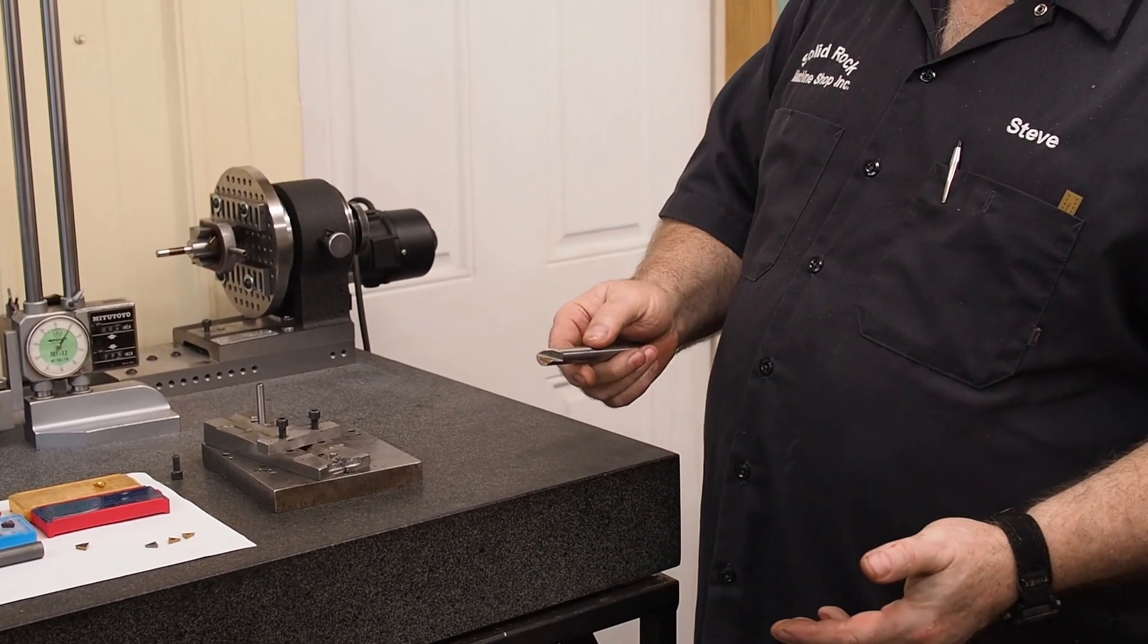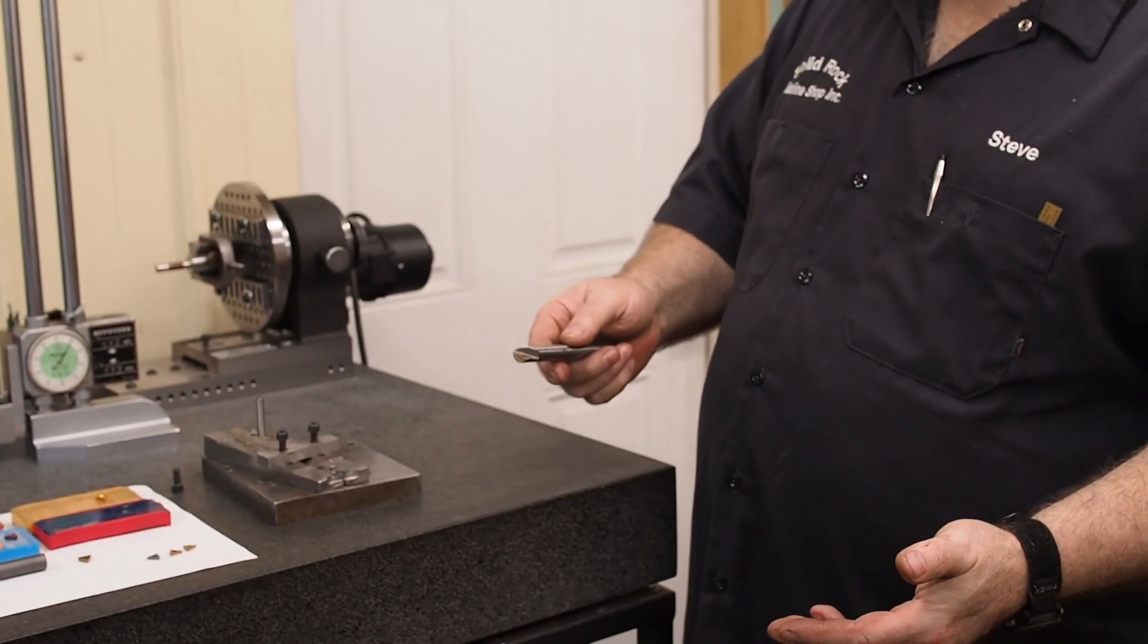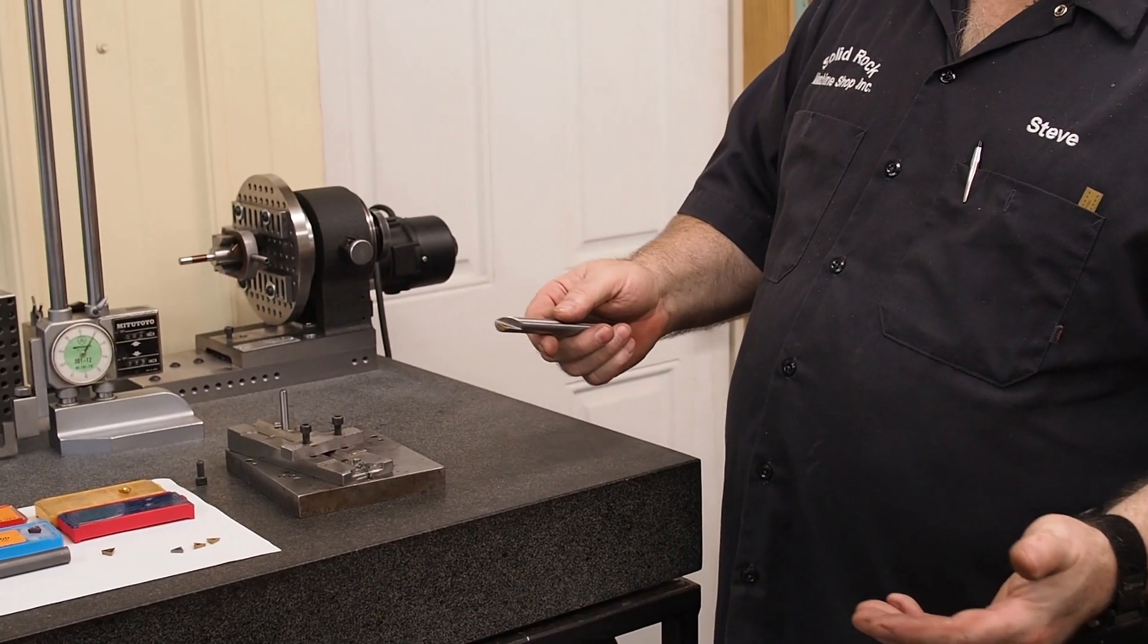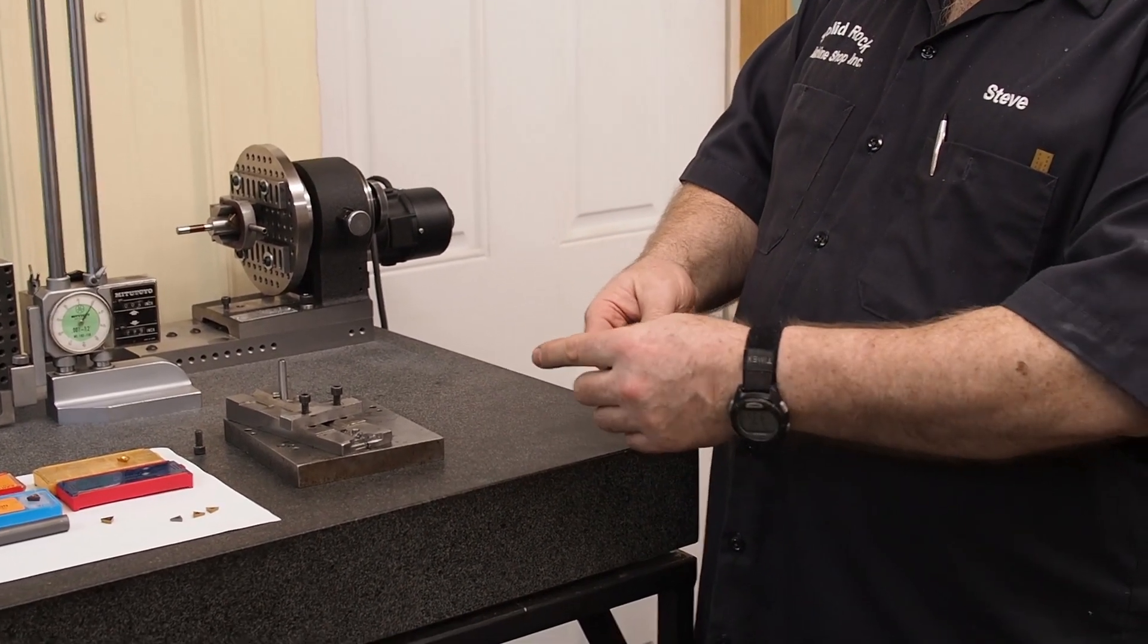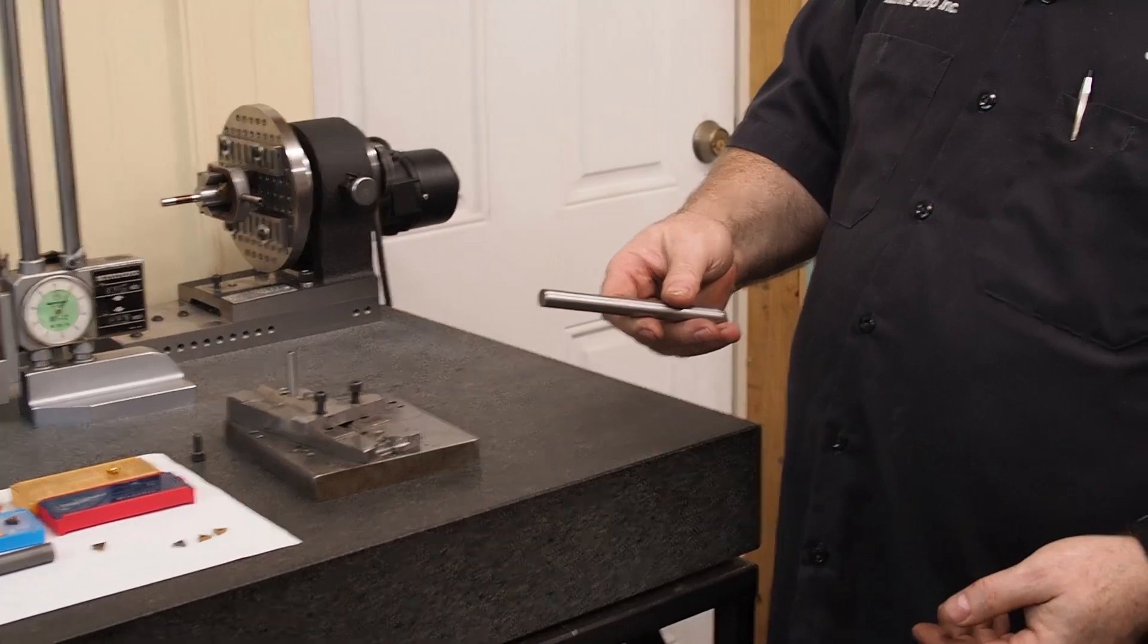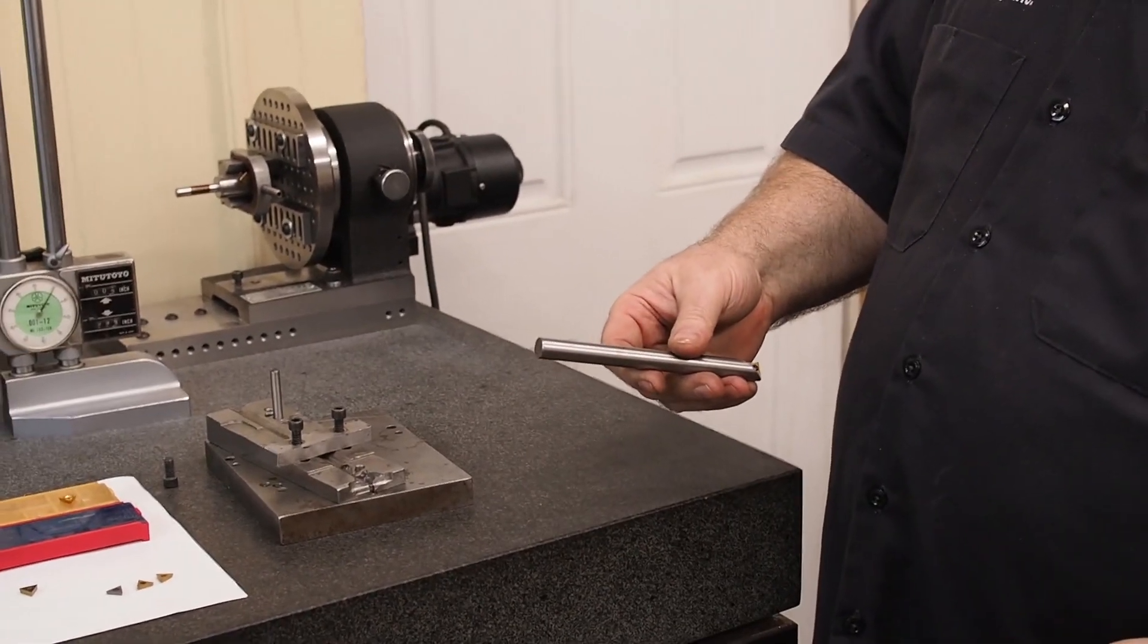And it comes in handy if they got a job set up and they destroy the bar and now they don't have a tool they can use. This bar was just working perfect. Well now it saves them because now they can just flip it around and they can use the other end of the bar.